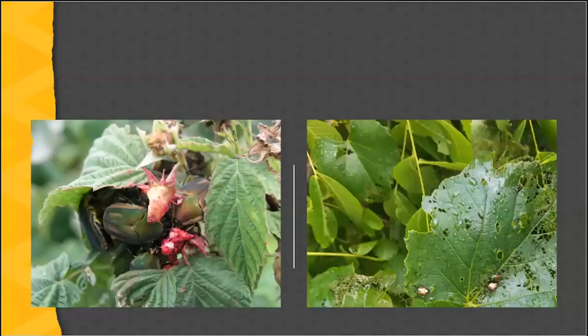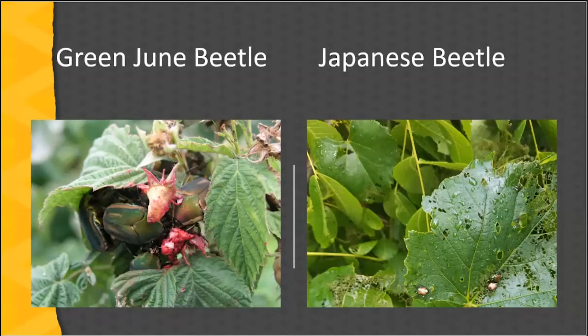Some examples of chewing insects: on the left we have the green June beetle, which typically gets on fruit that is overripe, as shown here on blackberries. Japanese beetles like all of our fruit crops — typically their chewing damage is on leaves, and they can basically skeletonize leaves, as shown here on grapes. They will also get on fruit if it's available, but typically do a lot of damage on the leaves.